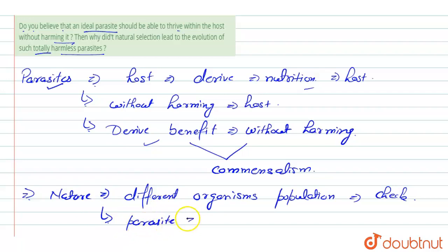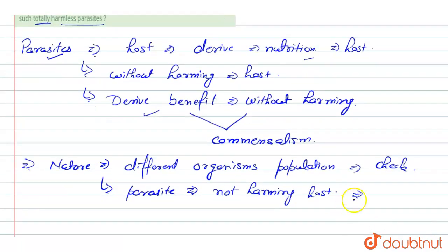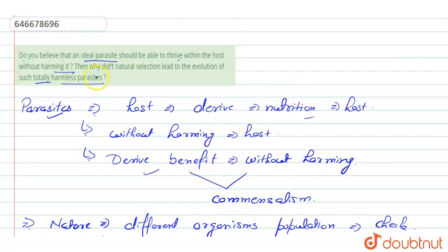Parasites that are not harming the host do not fulfill nature's task, nature's cause. That's why they get eliminated from nature. So this is the reason why harmless parasites are eliminated by natural selection.